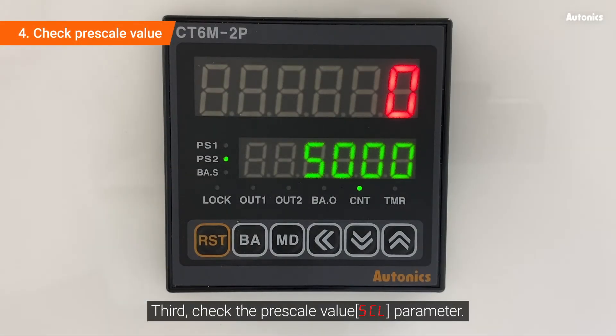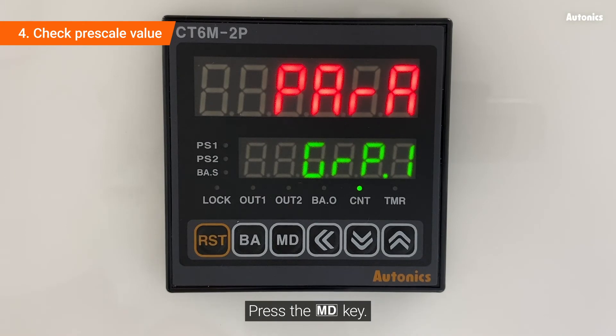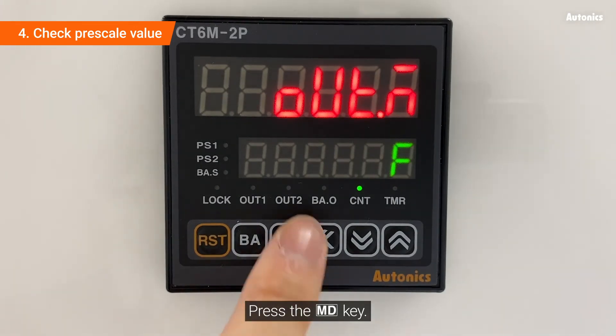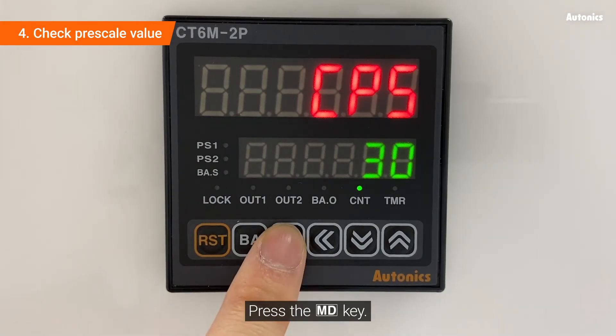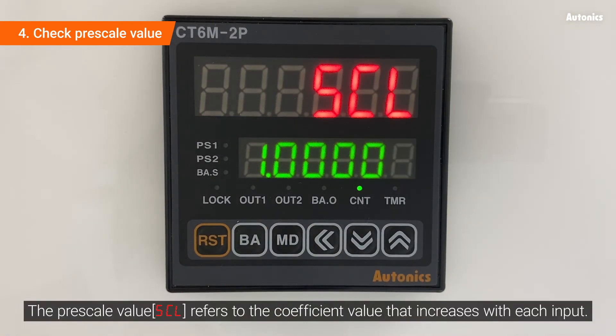Third, check the pre-scale value SCL parameter. Press the MD key for 3 seconds in run mode, then press the MD key twice. The pre-scale value SCL refers to the coefficient value.